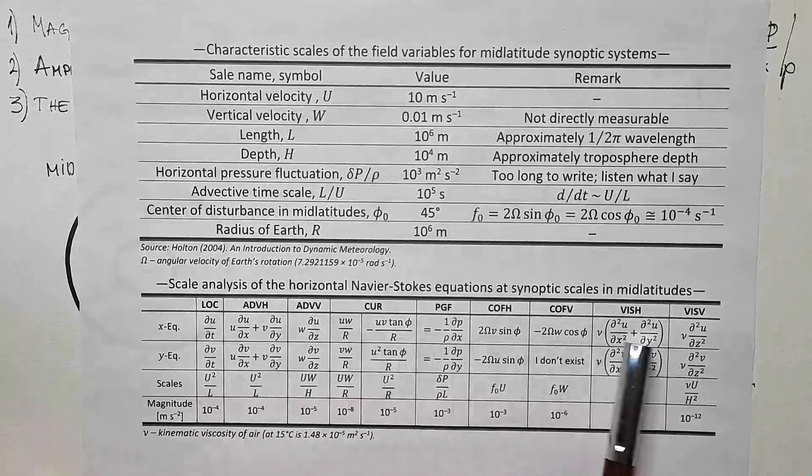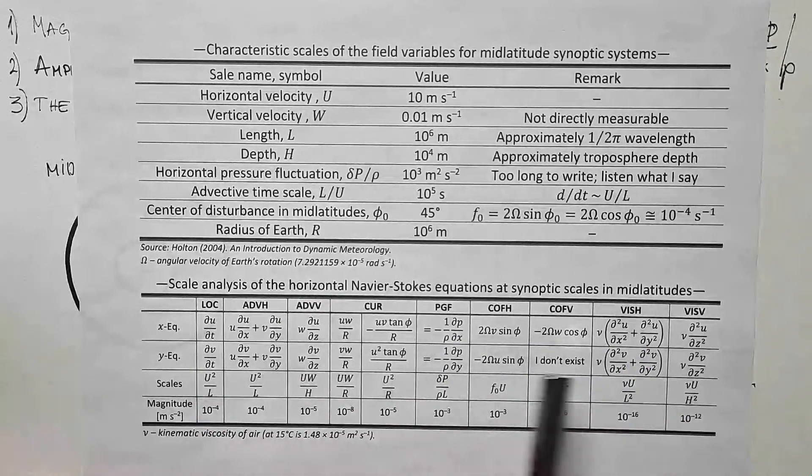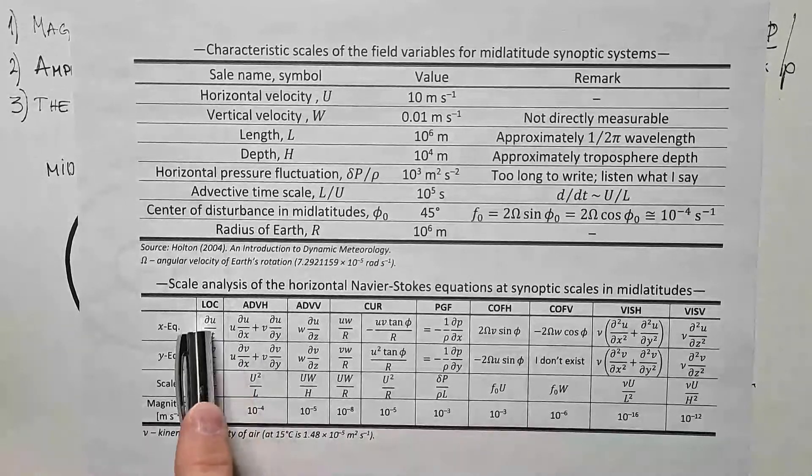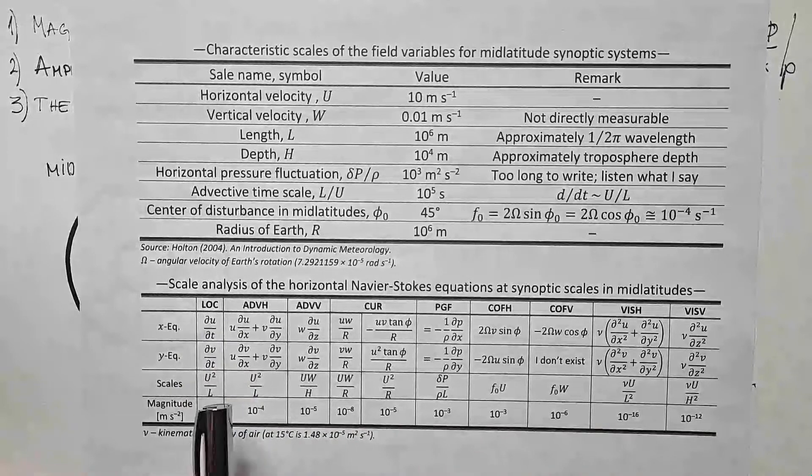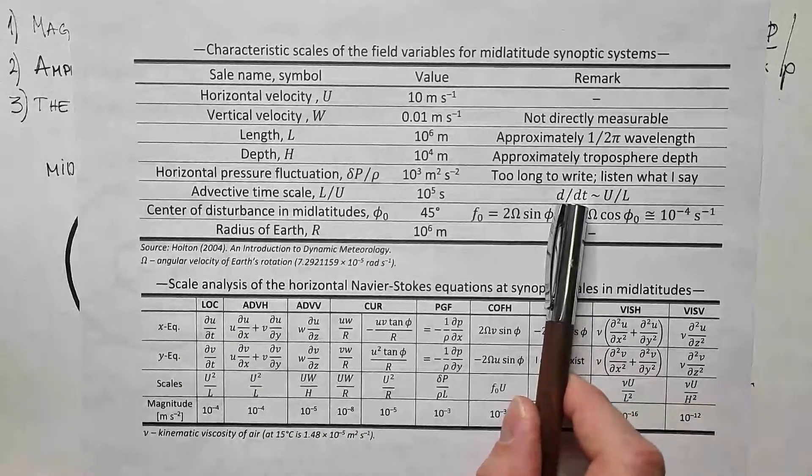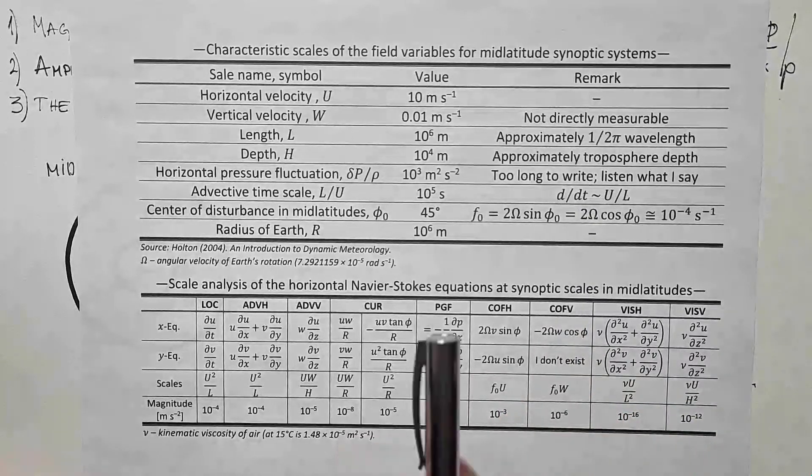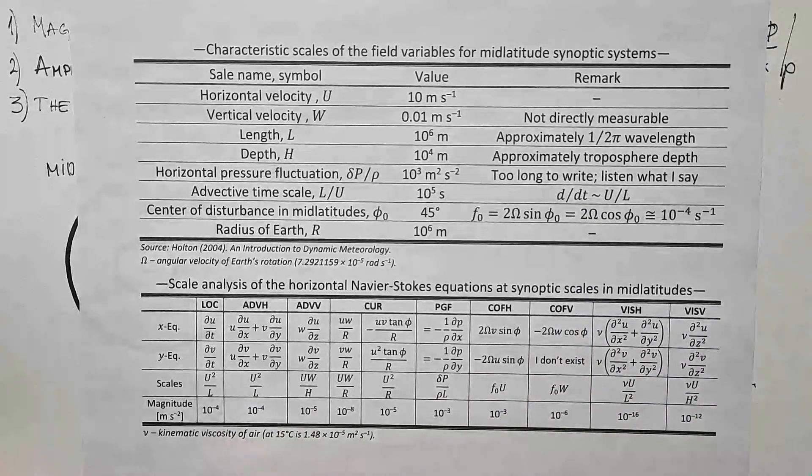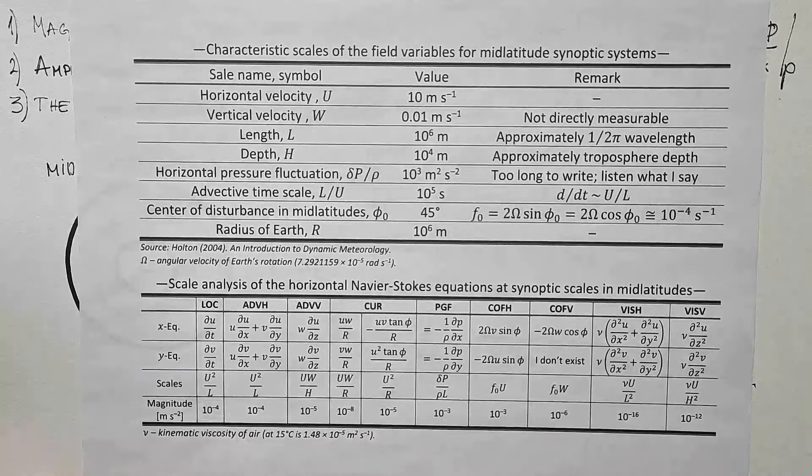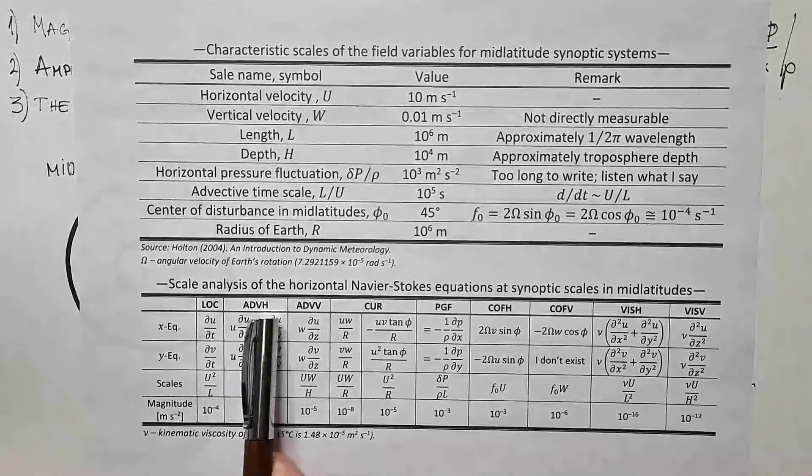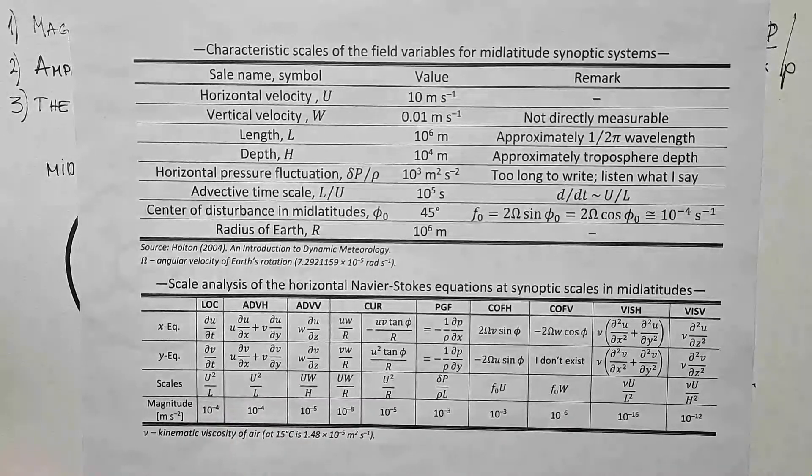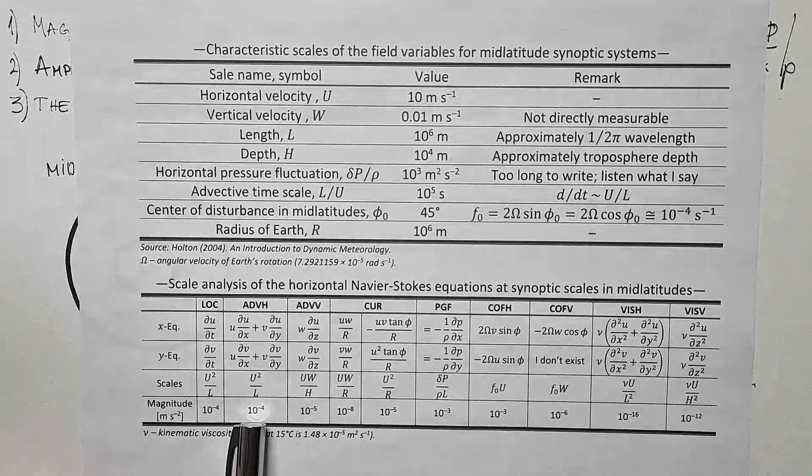Now, when we discuss these characteristic scales and variables, we can go finally to Navier-Stokes equations and scale them. These are terms in Navier-Stokes equations in the horizontal direction x and y. First, we have local derivatives, and you can see they scale as u squared over L, because I just told you how this scales, and we add u, so you get u squared over L. And the magnitude of this term is 10 to the power minus 4. Then horizontal advection scales the same way as local derivative, and therefore it has the same magnitude.